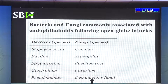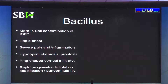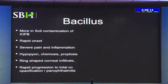There are many bacteria and fungi that cause ocular infection. The most prominent ones are Staphylococcus aureus, Staphylococcus epidermidis, Bacillus, and for fungus, Candida. Bacillus is a ubiquitous organism found in soil, so suspect it with any soil or mud-related injury. It is characterized by rapid onset, severe pain, hypopyon, chemosis, ring-shaped infiltrates, and progresses to total corneal opacity, panophthalmitis, and no perception of light very quickly.